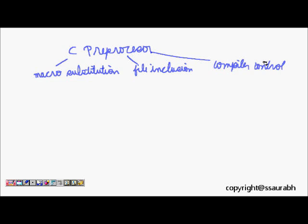And the last is compiler control. These are the three options available. Macro substitution is the first one, so we will try to understand this.